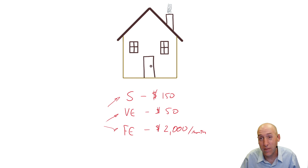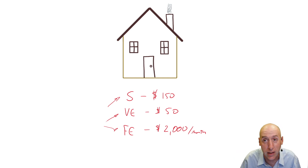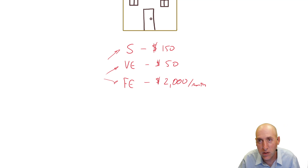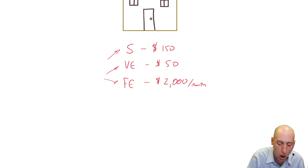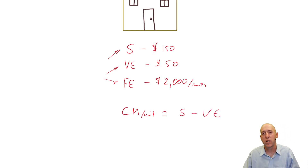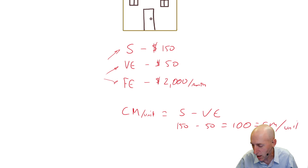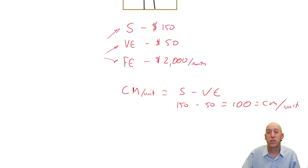The first thing we determined was the break-even point for her company — how many nights per month did she need to rent out the place to break even? An important concept here is something called the contribution margin, or CM. Her selling price per unit is $150, and her variable expenses per unit are $50, so every customer contributes $100 to her bottom line. $150 minus $50 equals $100 — that is her CM per unit. Anytime she has a new customer, it helps her profitability by $100.